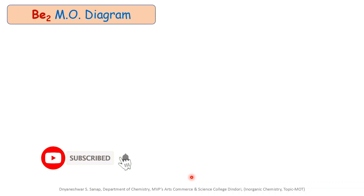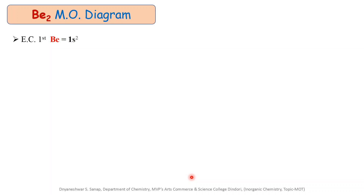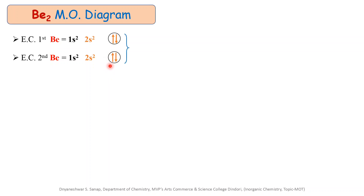Now let us see the second molecule, the Be2 molecular orbital energy level diagram. The electronic configuration for beryllium is 1s², 2s². Similarly, the second beryllium atom is 1s², 2s². Writing the valence shell configuration in tabulated form: 2s² for each atom. There are a total of 4 electrons which participate in the bonding for the Be2 molecular orbital energy level diagram.